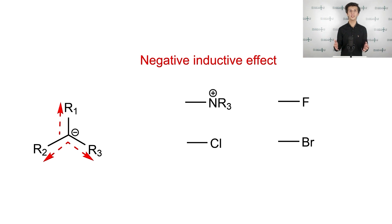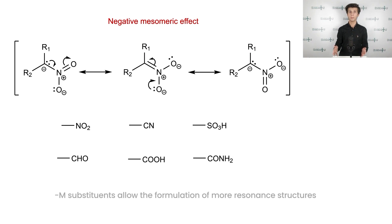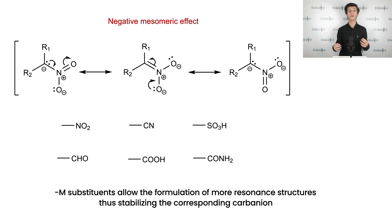The second group can efficiently delocalize the charge, thus stabilizing the whole system. In addition, minus M substituents allow the formulation of more resonance structures, what also enhances the stability of the corresponding carbanion.